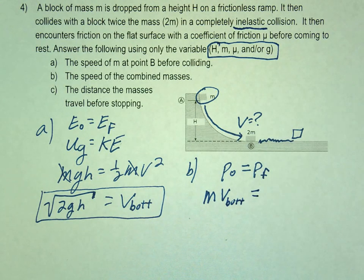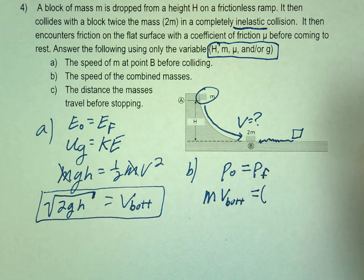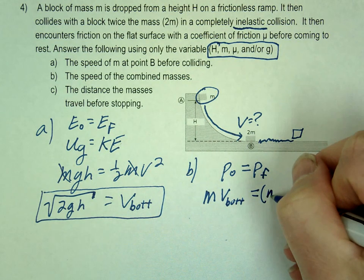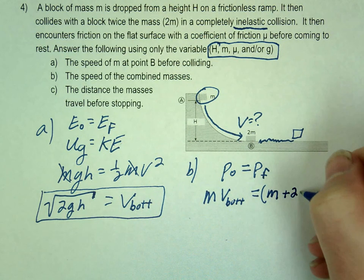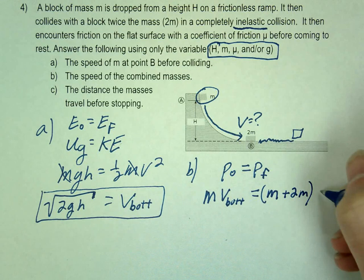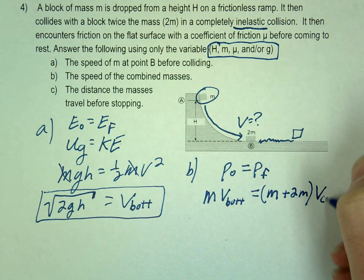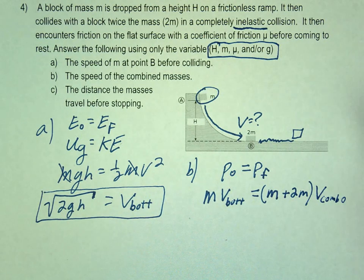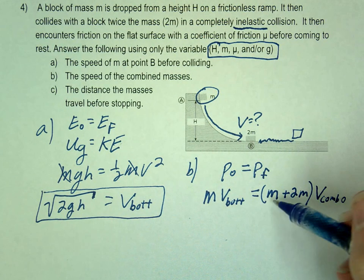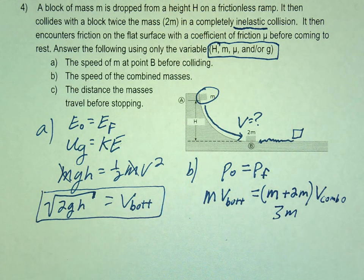That should equal, they stick, right? So we're going to add the masses. Just to formally do it, let's do it. M plus 2m, they stick. And then let's just call this v combo. That's the combined masses after the collision. And what is m plus 2m? 3m.